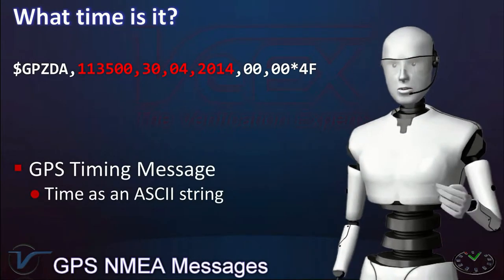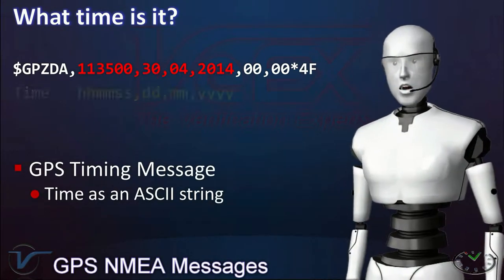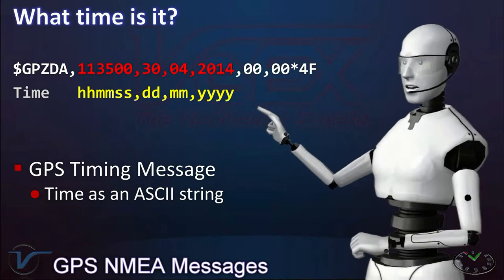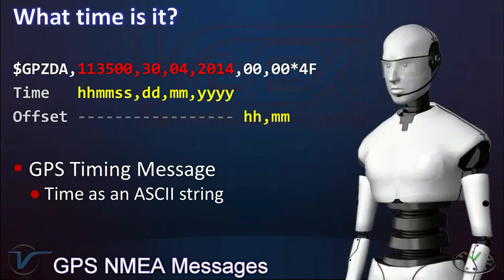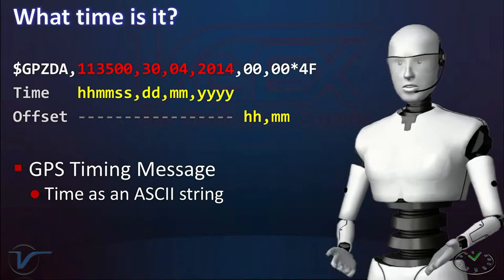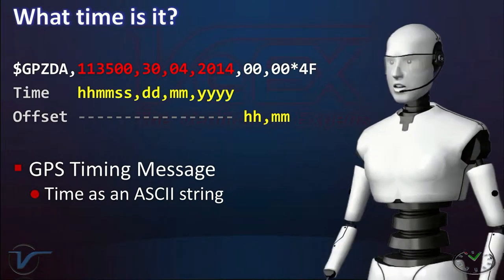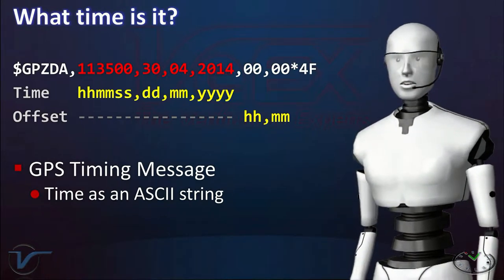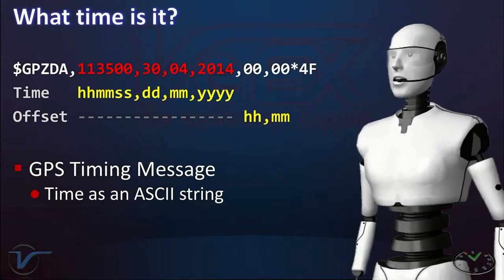To make matters more complicated, you probably noticed that those messages are written in human readable characters. Computers have to translate them into meaningful numbers, something they can use to run calculations and control processes. That adds a few extra microseconds.